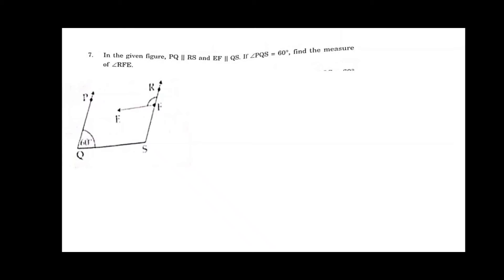Now for the next one, in the given figure PQ parallel to RS and EF parallel to QS. If angle PQS equals 60 degrees, find the measure of angle RPE. So now if you observe the figure, PQ parallel to RS.